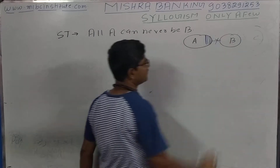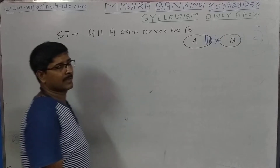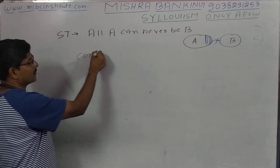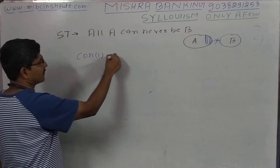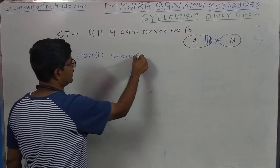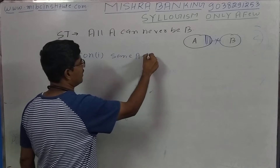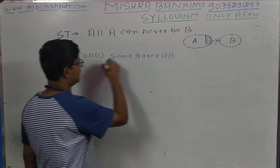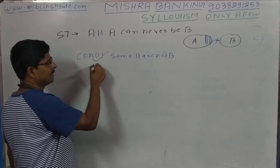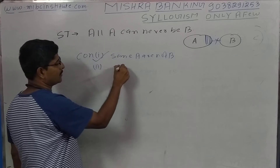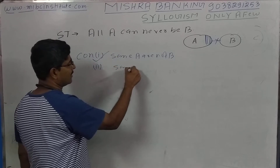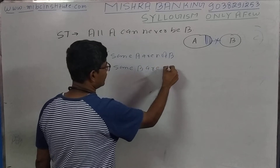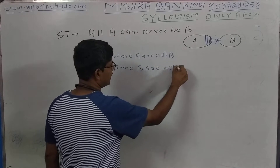This is our negative result. Now we can see the conclusion. Conclusion number one — the first conclusion is 'some A or not B.' This is the definition of failure. So this is the definition of failure: 'some B or not A.'